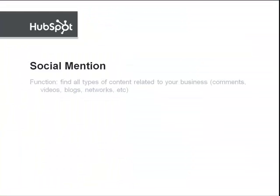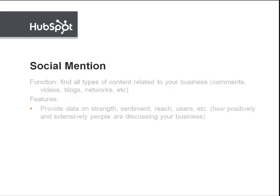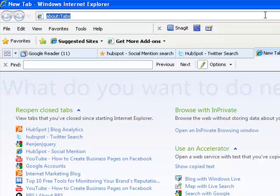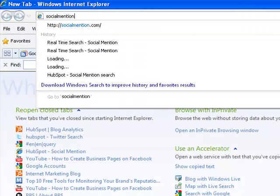The third tool is Social Mention. Social Mention is a website that finds all chats about your business and filters them by types of content, such as video, blog, and network. Some distinct features of Social Mention are: first, the site provides data on strength, sentiment, reach, and users — basically information on how positively and extensively people are discussing your business. Another distinct feature is that the site allows you to subscribe to specific or all types of feeds relevant to your business.